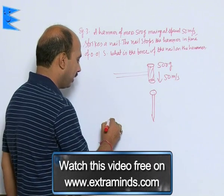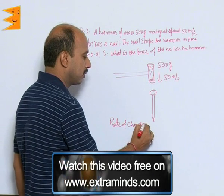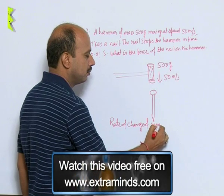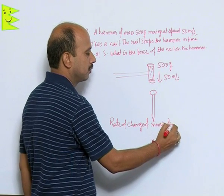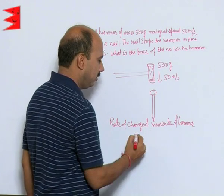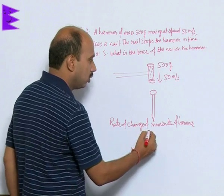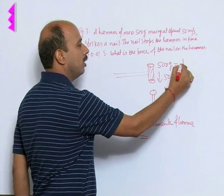So we can get rate of change of momentum of hammer is equal to, what is that? Final momentum is 0, mass is we can write here 1 upon 2 kg.